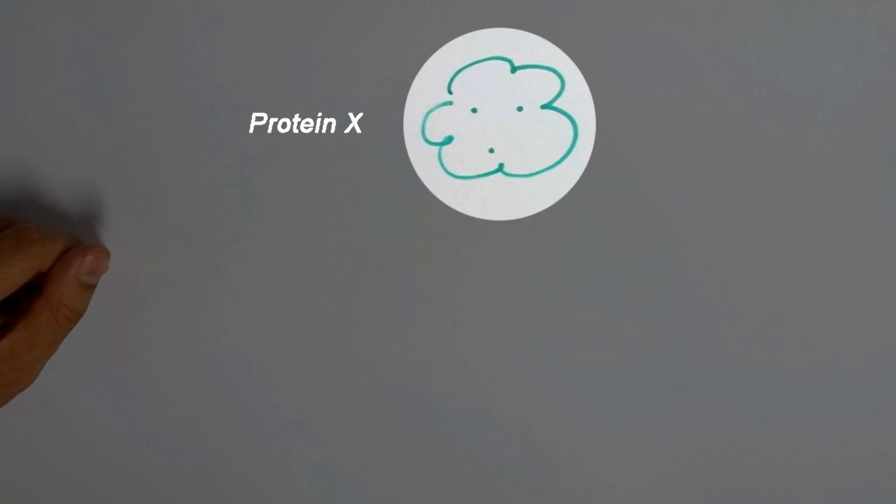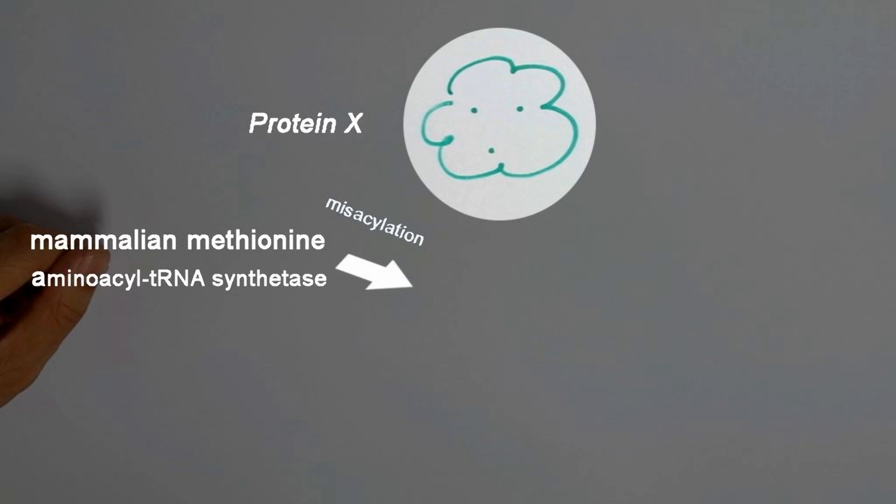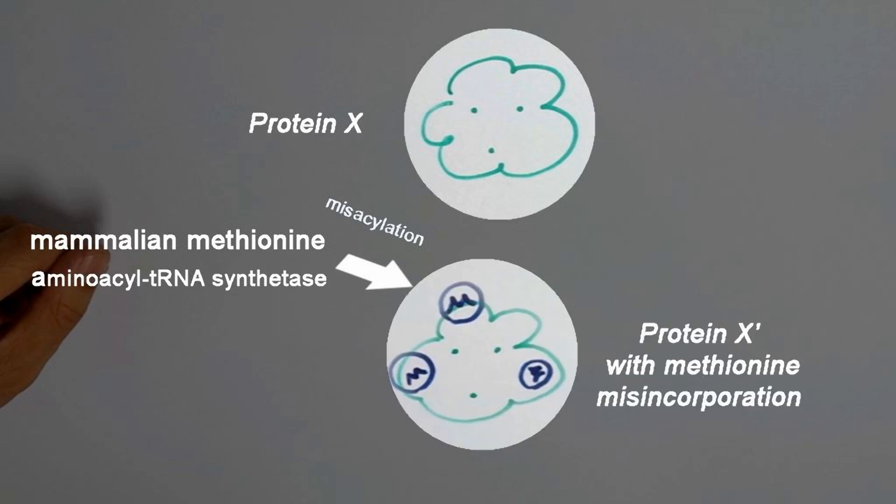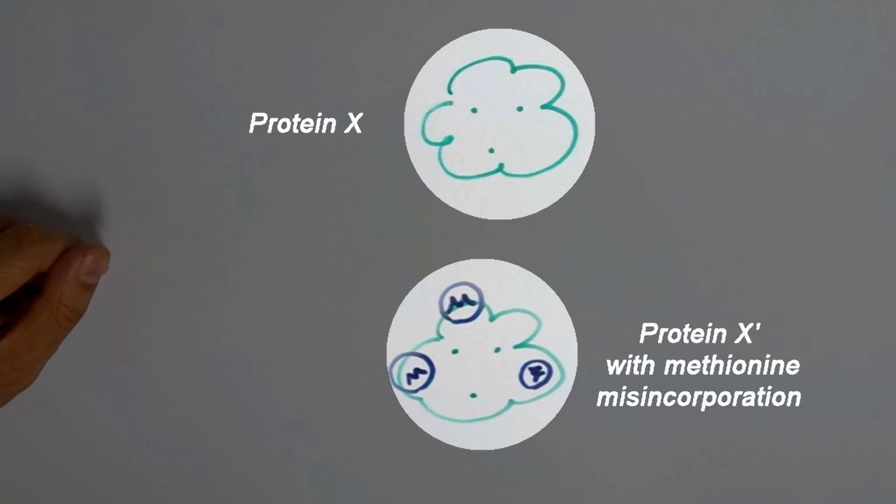Han and Udall showed that the mammalian methionine aminoacyl-tRNA synthetase can recognize a number of non-cognate tRNAs and misacylate them with methionine. And these misacylated tRNAs can incorporate methionine into newly synthesized proteins at positions that code for non-methionine residues. So, a protein may end up with several methionine residues fairly randomly distributed, which were not coded for in the gene originally.